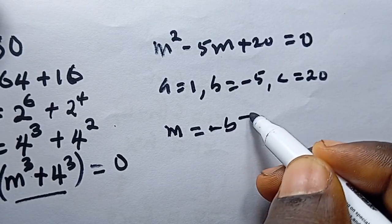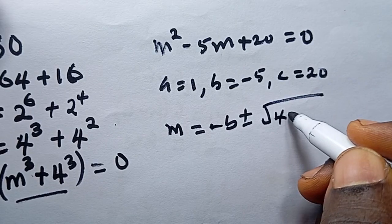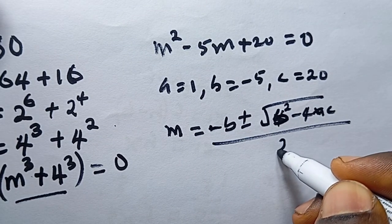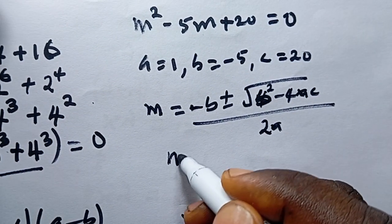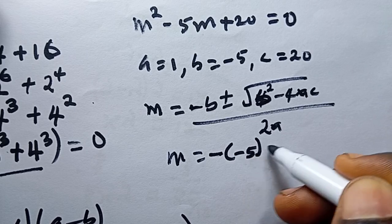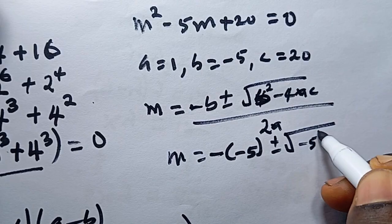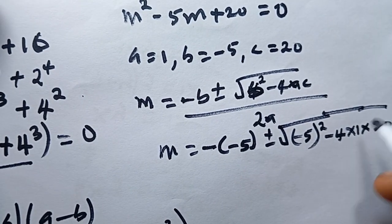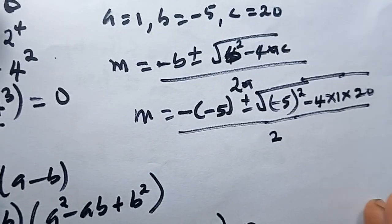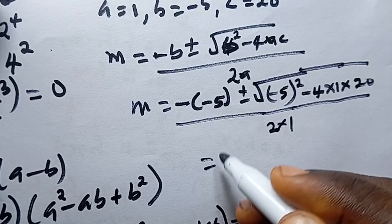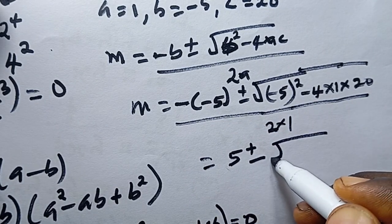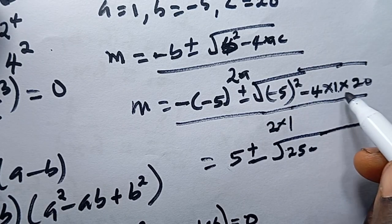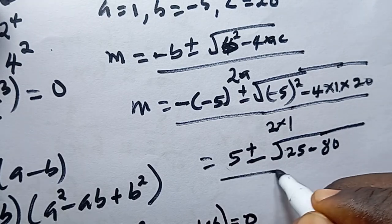Applying the quadratic formula: m = (−b ± √(b² − 4ac)) / (2a). Substituting, m = (−(−5) ± √((−5)² − 4 × 1 × 20)) / (2 × 1), which gives m = (5 ± √(25 − 80)) / 2.